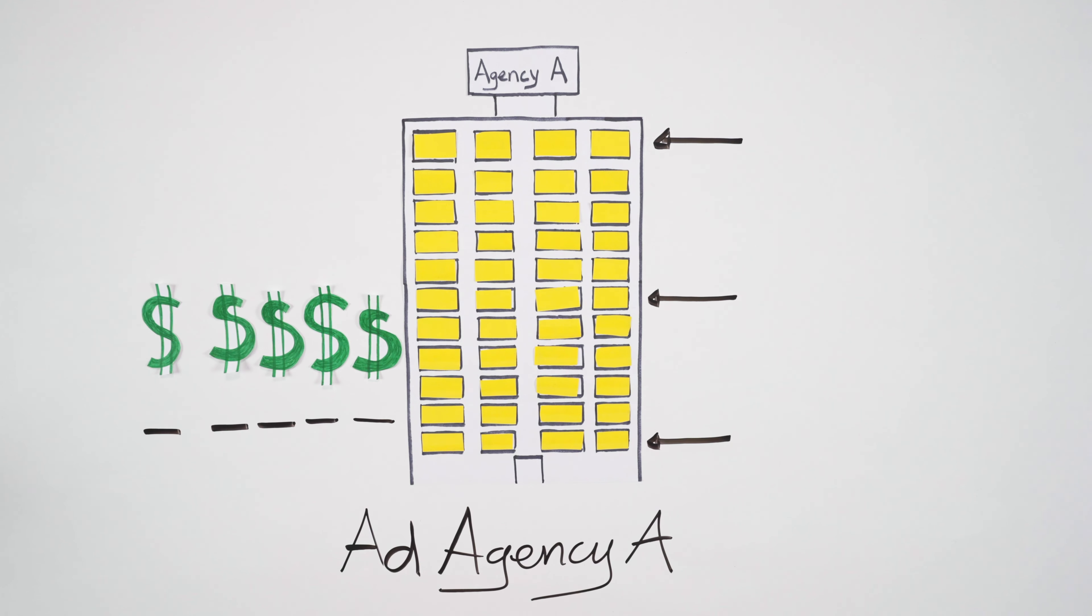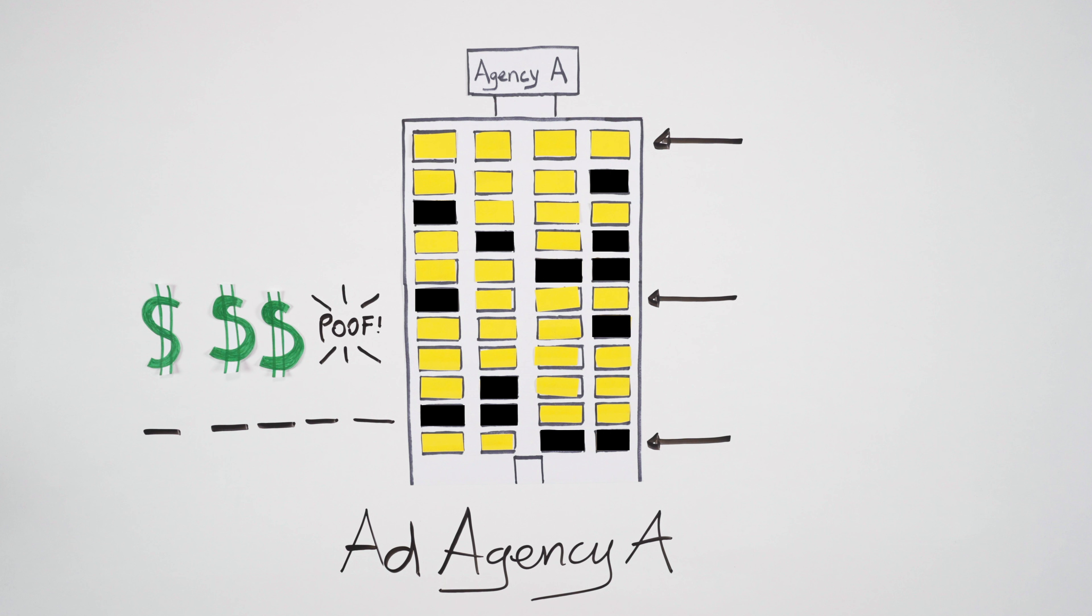Despite its inefficiency, the agency does pretty well with this model when the economy is doing well. But when the economy is not doing well and your budget gets slashed, Agency A still has a lot of expenses to take care of before they can even think about taking care of you.